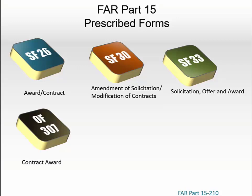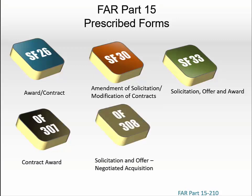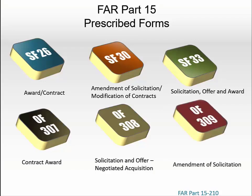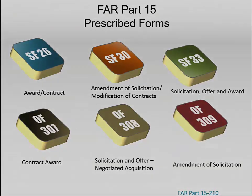Optional Form 307 may be used to award negotiated contracts. Optional Form 308 can be used to support solicitation of negotiated contracts, and award of these contracts may be made by using Optional Form 307. Finally, Optional Form 309 may be used to amend solicitations of negotiated contracts.